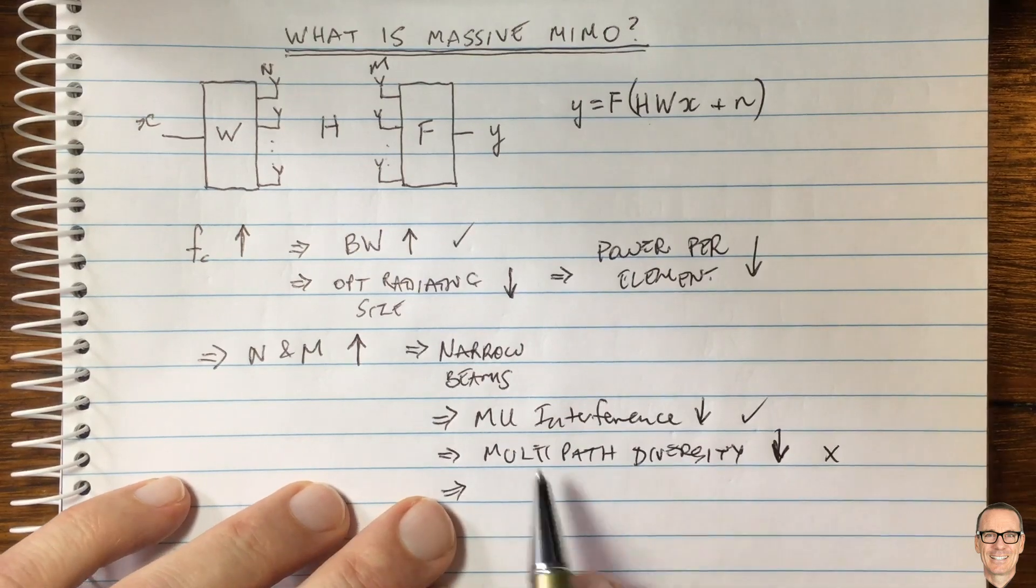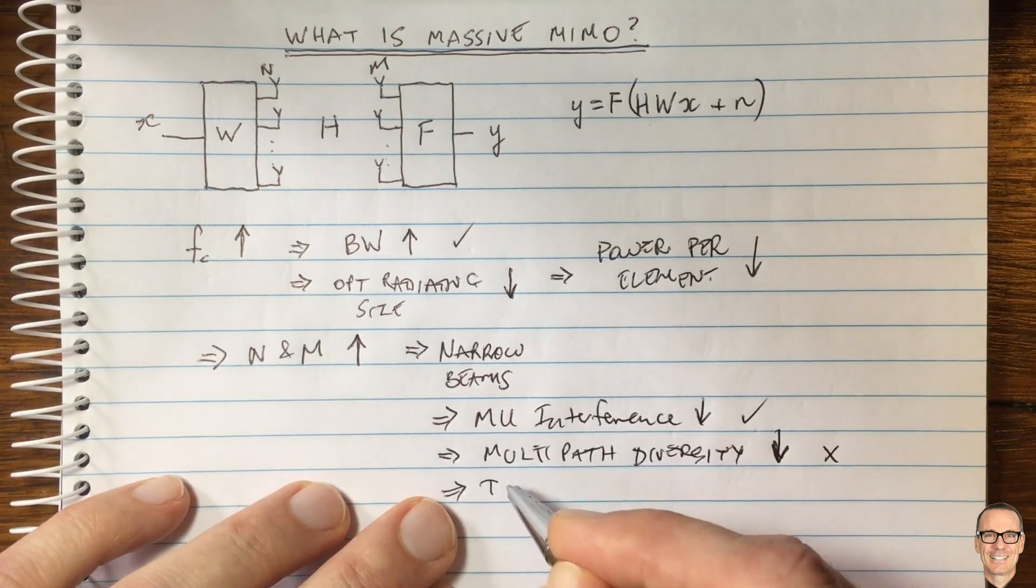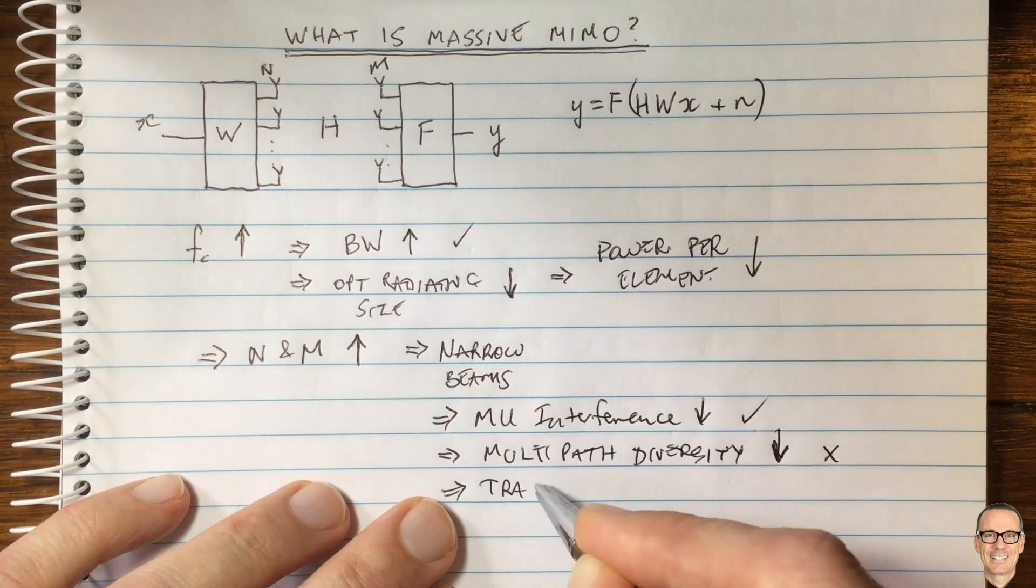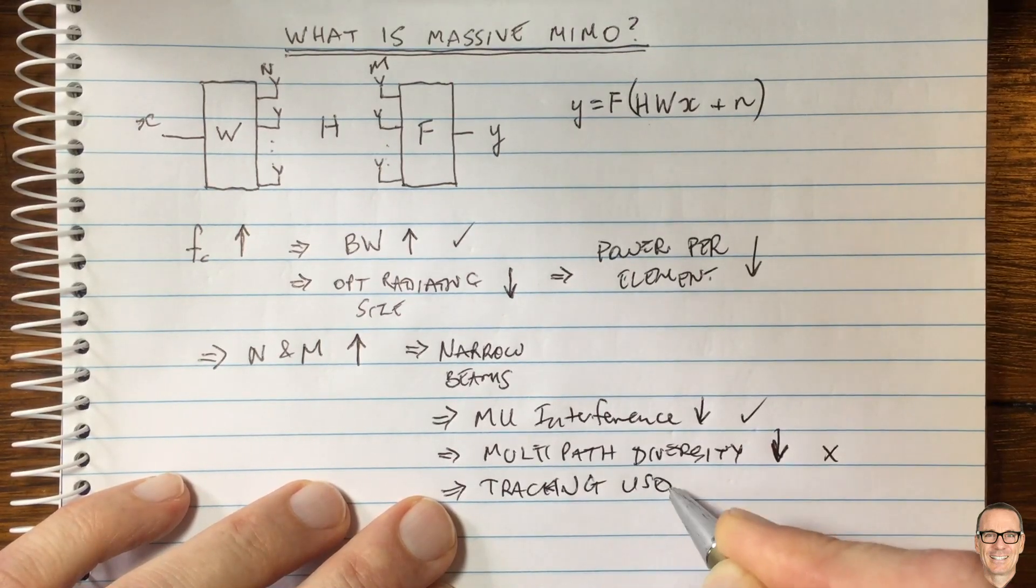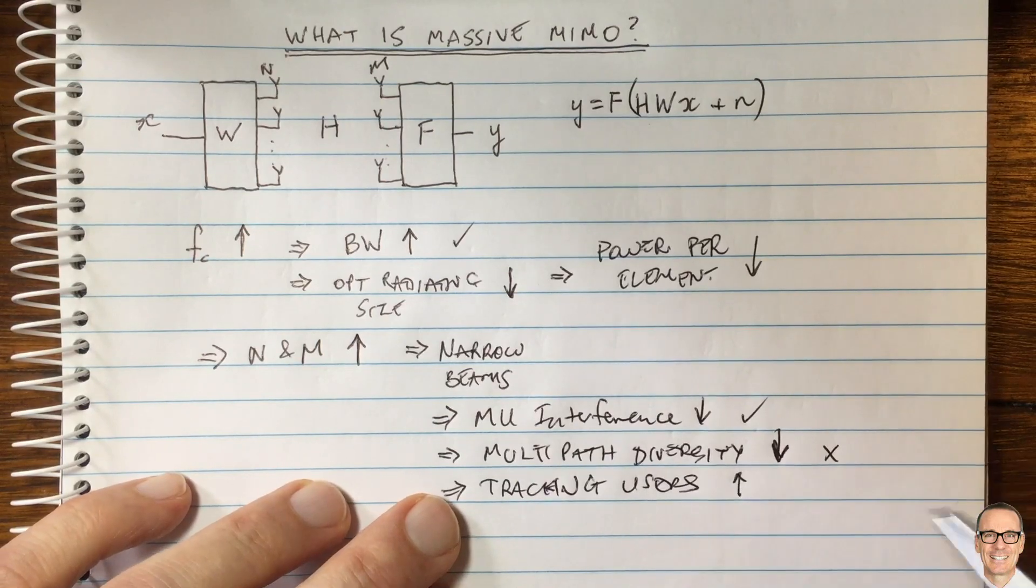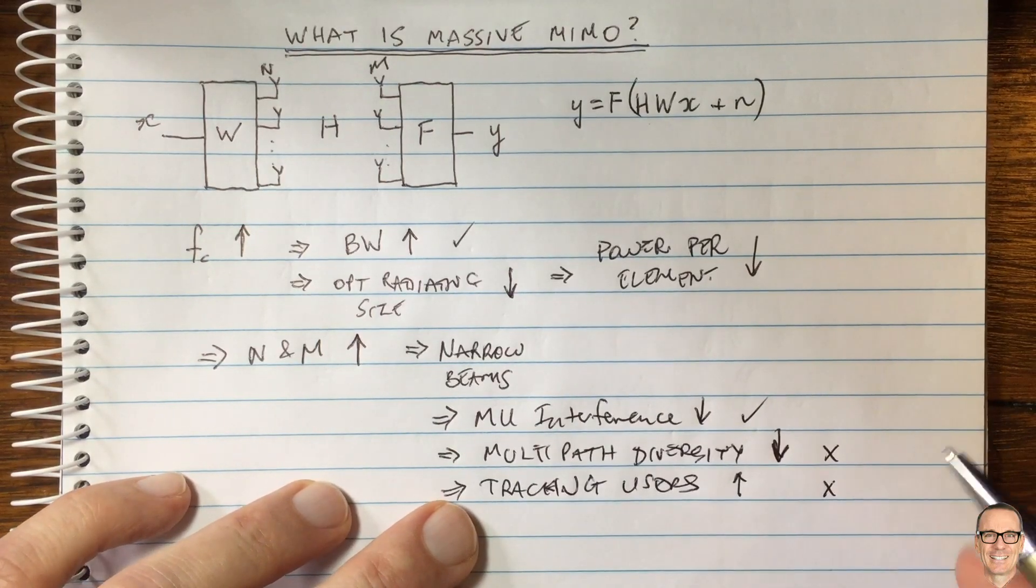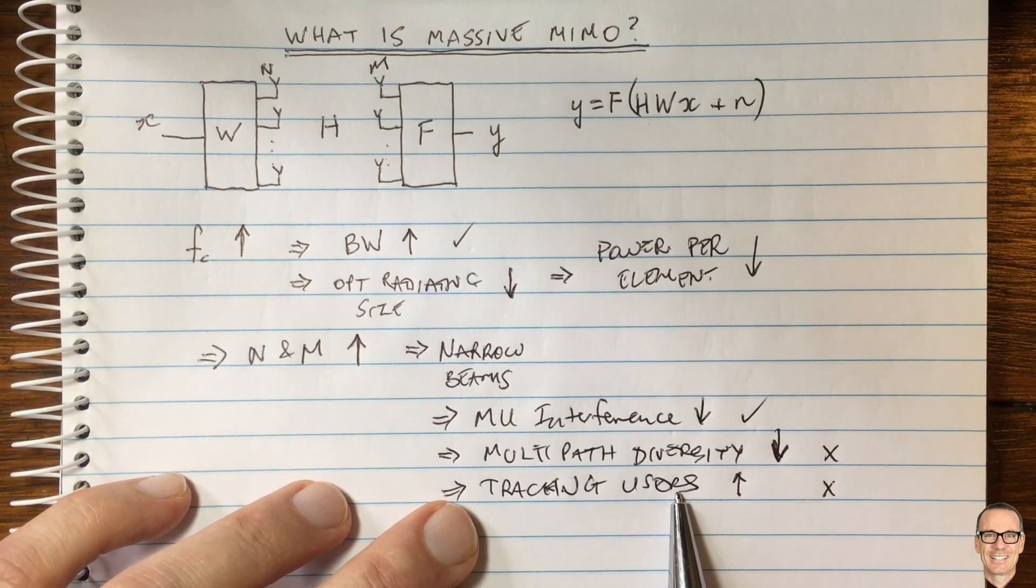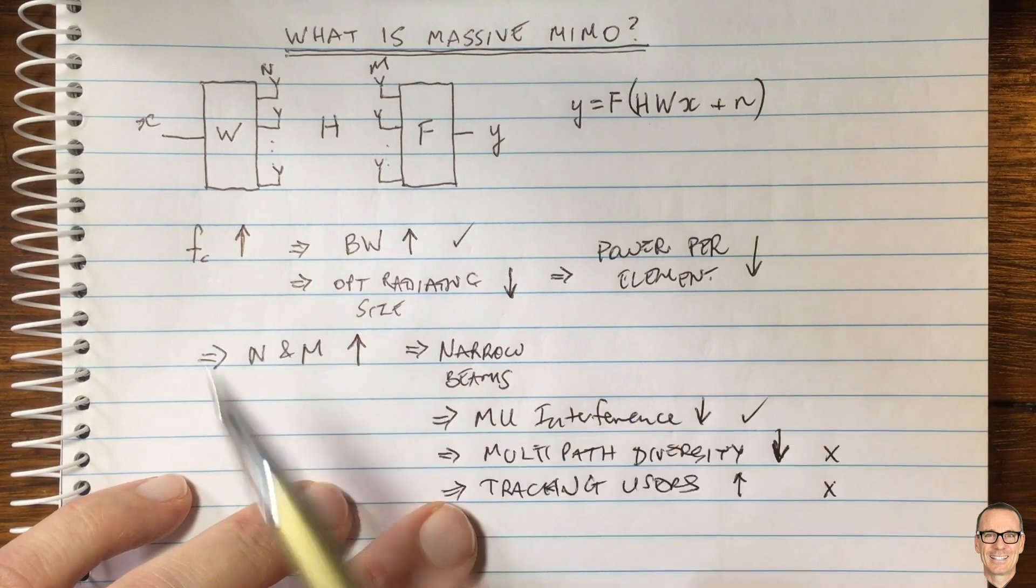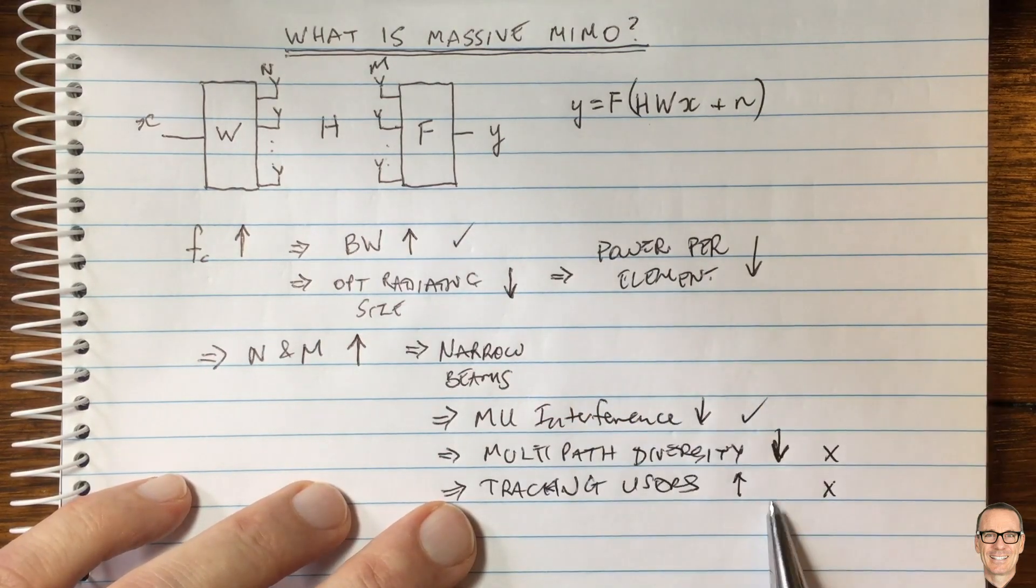Another thing narrow beams imply is that you need to track the users. You've got to track them more, and that's a negative thing. It becomes more difficult tracking users. You've even got to find the users in the first place with narrow beams, which is a challenge, especially at the higher frequencies.